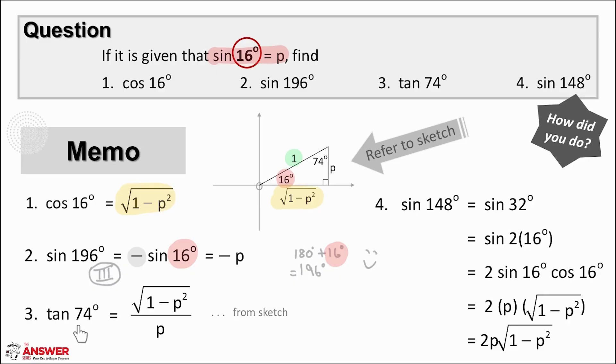Then number three is asking us to find tan of 74 degrees. Now we see the purpose of finding the third angle in our sketch and so we can read this off directly from the sketch. Tan is opposite over adjacent and so tan of 74° is √(1 - p²) over p.